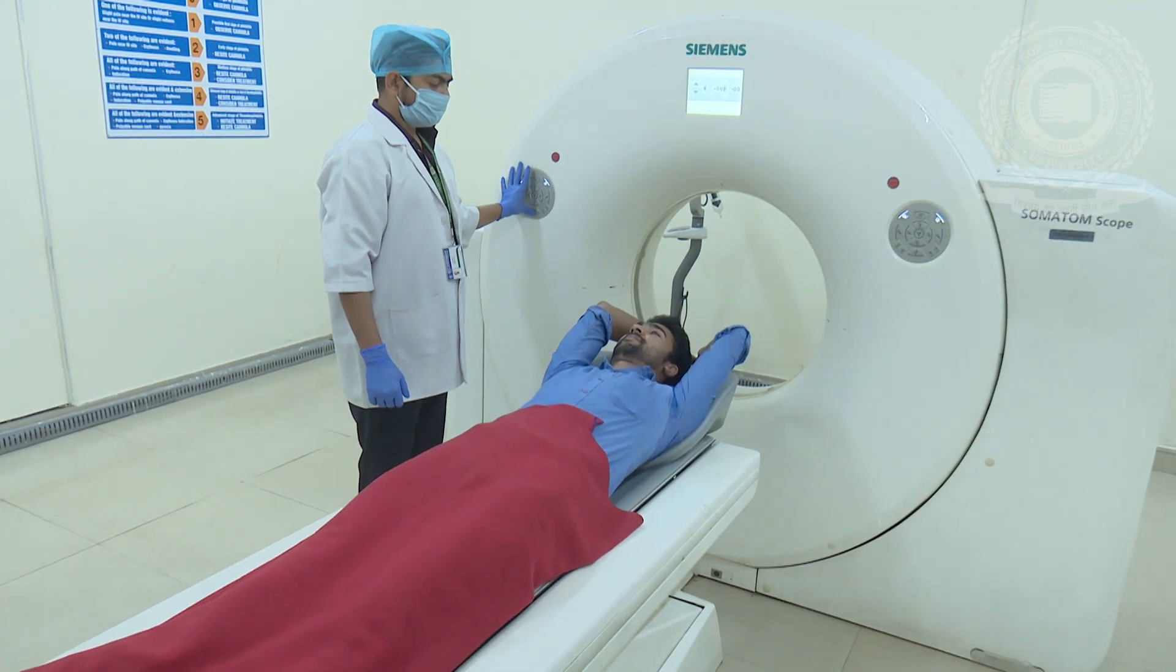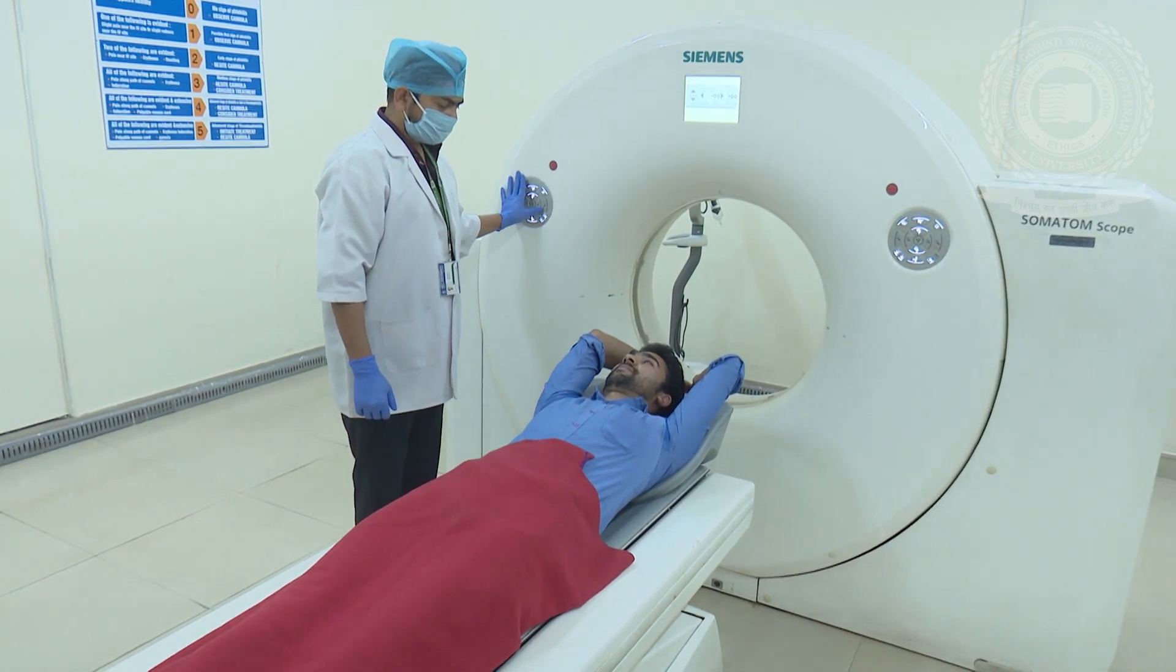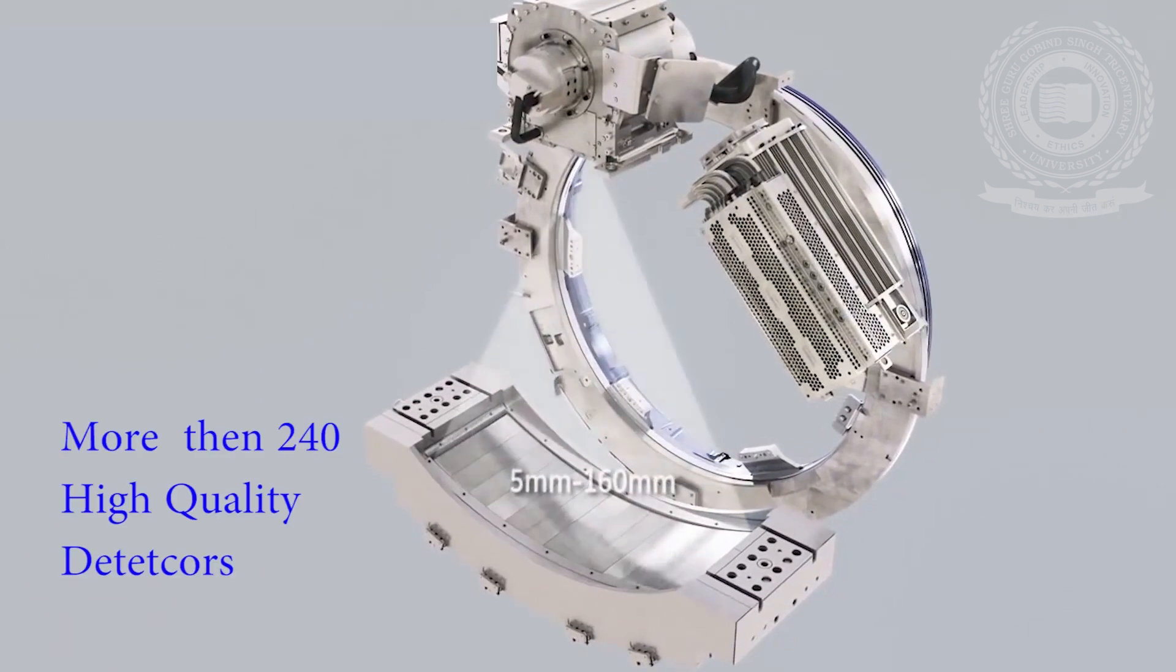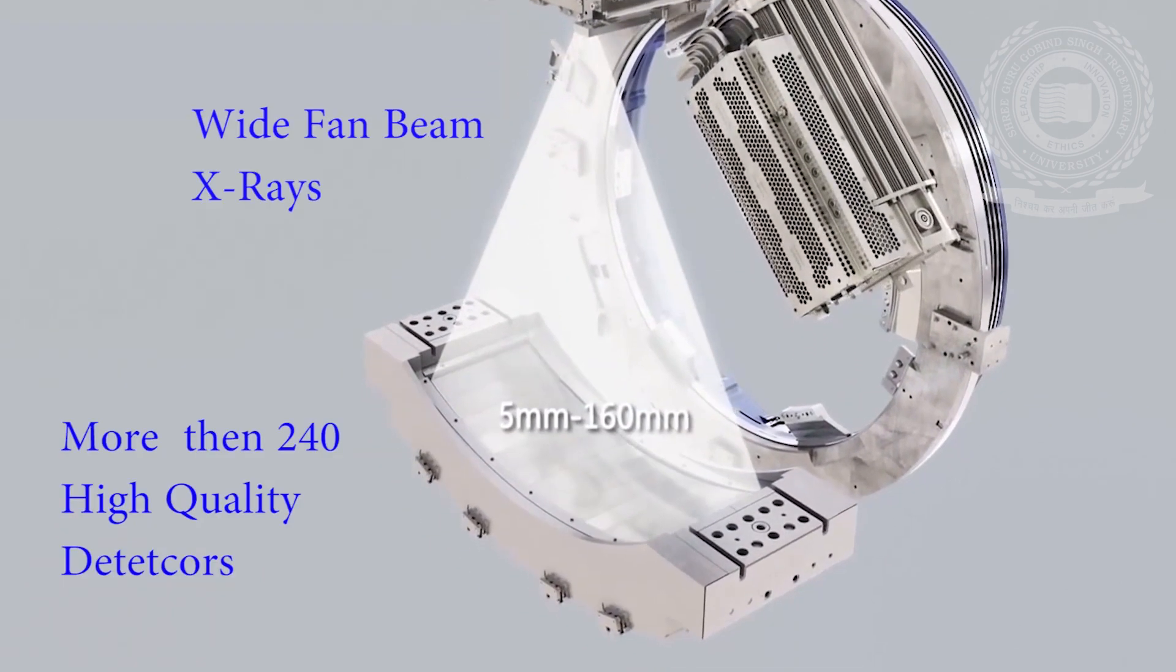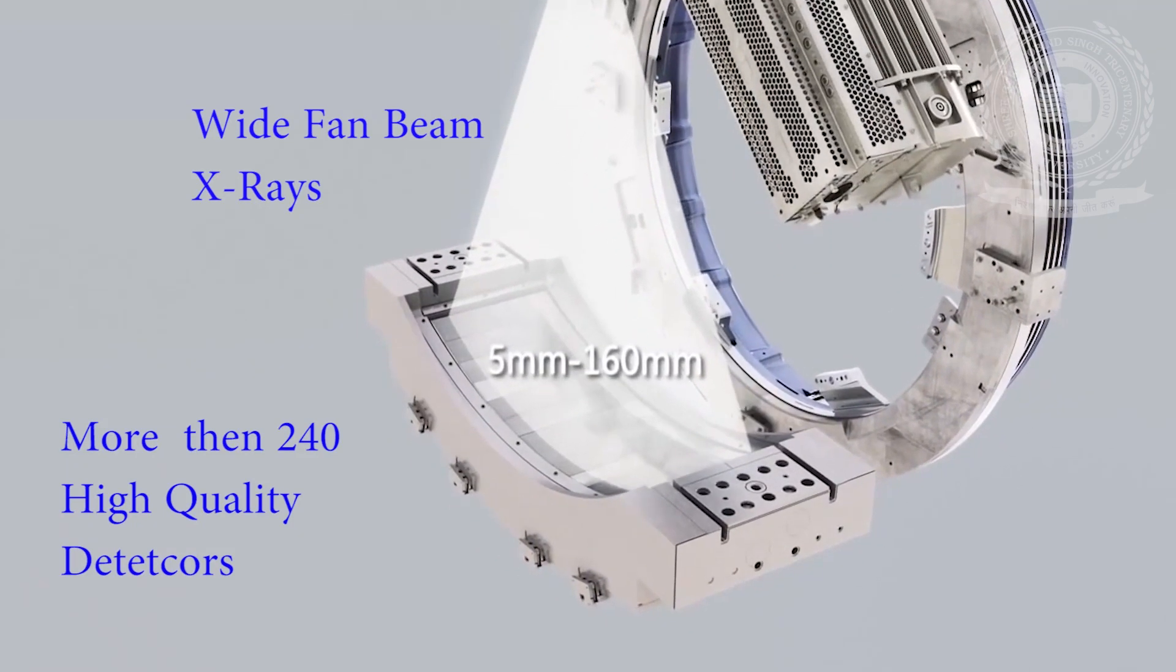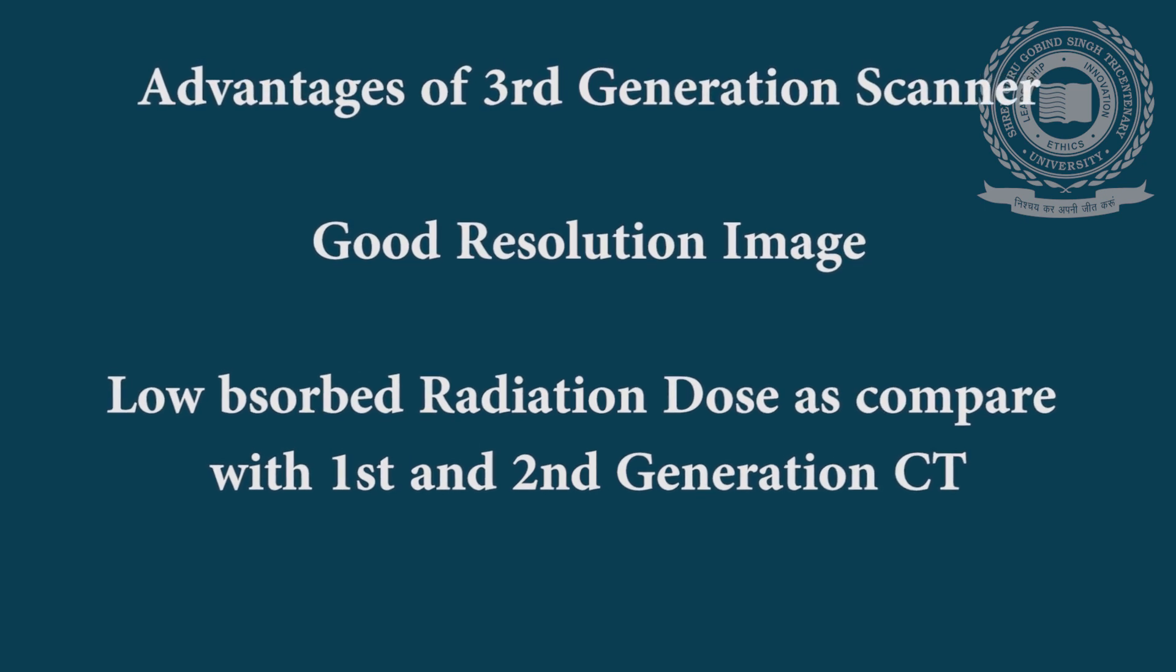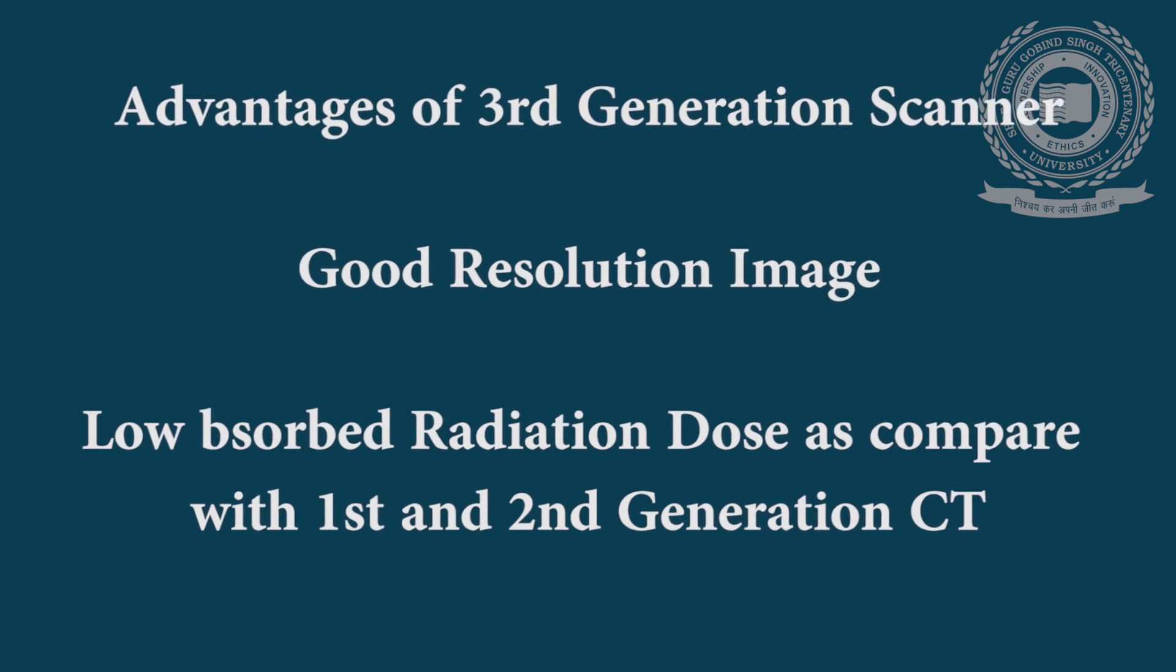Earlier this generation was only meant for single slice acquisition in one 360 degree rotation of X-ray tube, but nowadays it comes with multiple slice acquisition mode in one rotation of X-ray tube and detectors. Later on in this generation, 240 high quality detectors were used with wide fan beam of X-rays. More advantages of this equipment were good resolution image quality, low radiation dose in comparison with the first two generations, but still radiation absorbed dose was on the higher side.